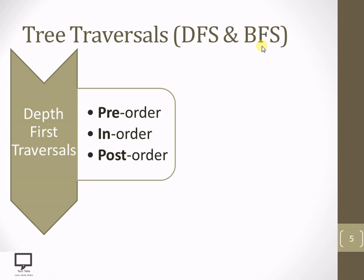They are pre-order, in-order, and post-order. These three different ways are basically dependent on the position of the root node, or the sequence in which the root node gets traversed. The root node gets traversed before or pre to the left and right child — it is called pre-order traversal. If the root node is traversed in between left and right child, it is called in-order traversal. And if the root node is traversed after or post to left and right subtrees, it is called post-order traversal.